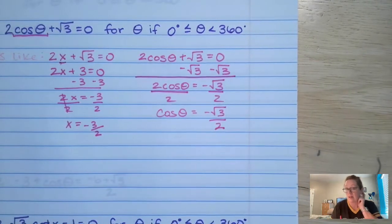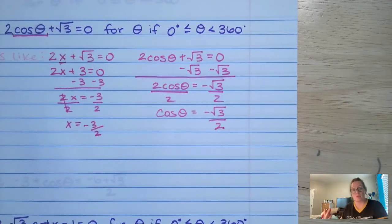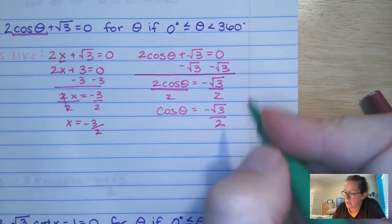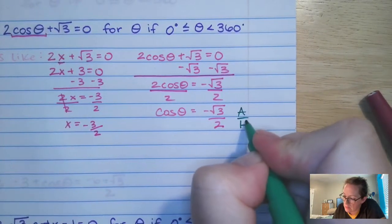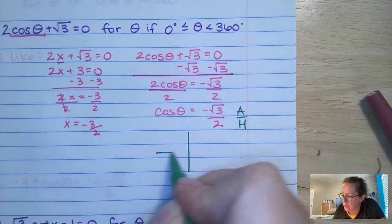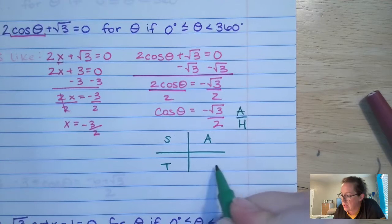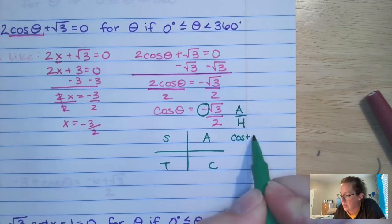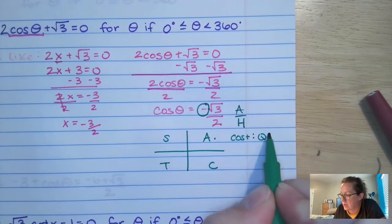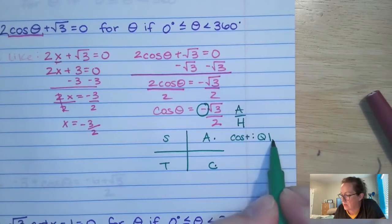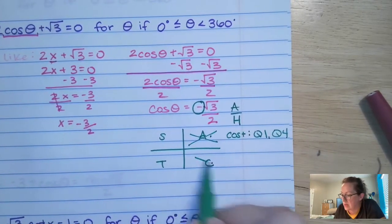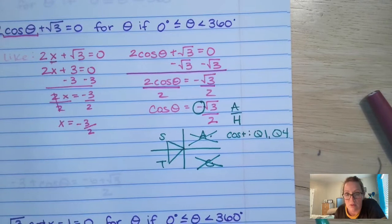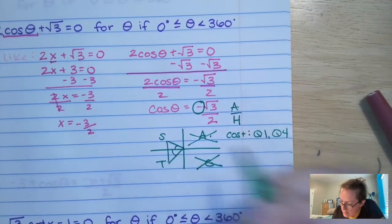So I get cos theta equals negative root 3 over 2. I've got to figure out, without a calculator, mind you, what theta values could be. So now we're going to put a little bit of everything together. We are going to say cosine is adjacent over hypotenuse, right? Also, we need to remember all students take calc. We're talking about a negative cosine.